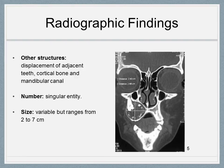Other Structures — adjacent teeth are frequently displaced in a mesial or distal direction away from the tumor. Cortical bone is often displaced buccally or lingually and is usually thinned in the same manner. A tumor originating in the mandible will often displace the mandibular canal in a lingual direction. Number — most always as a single entity. Size — variable, but ranges from 2 to 7 cm.